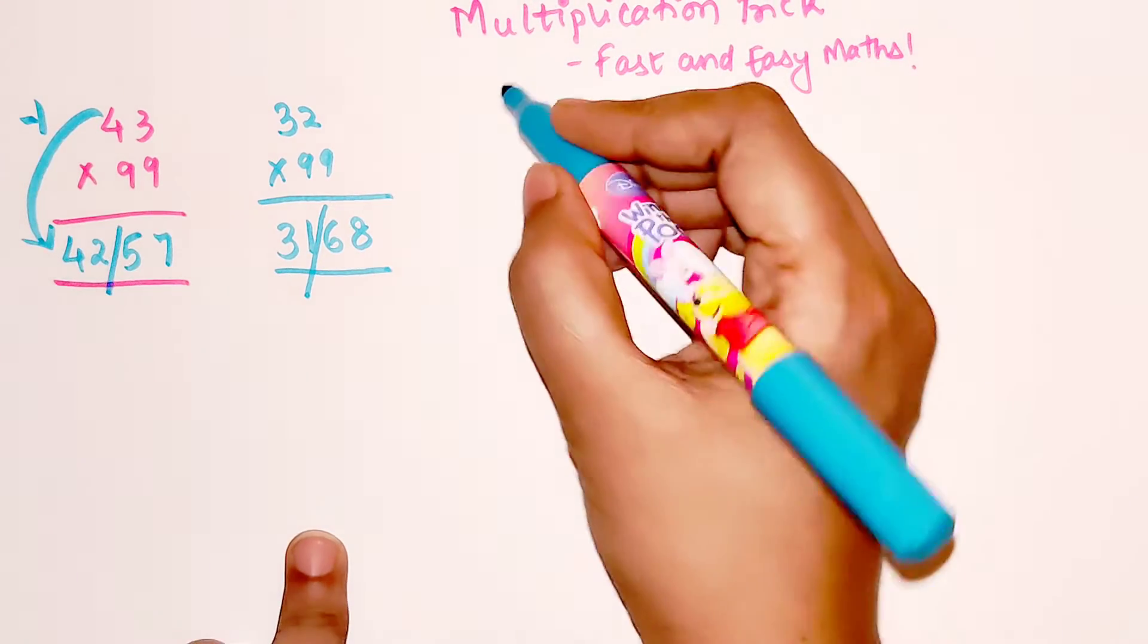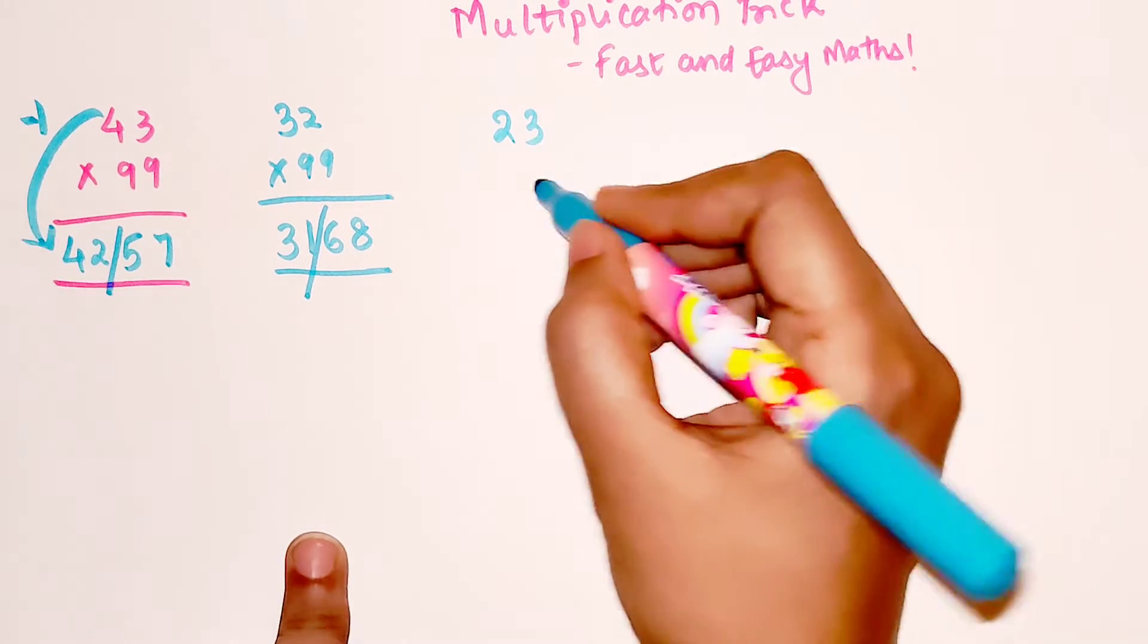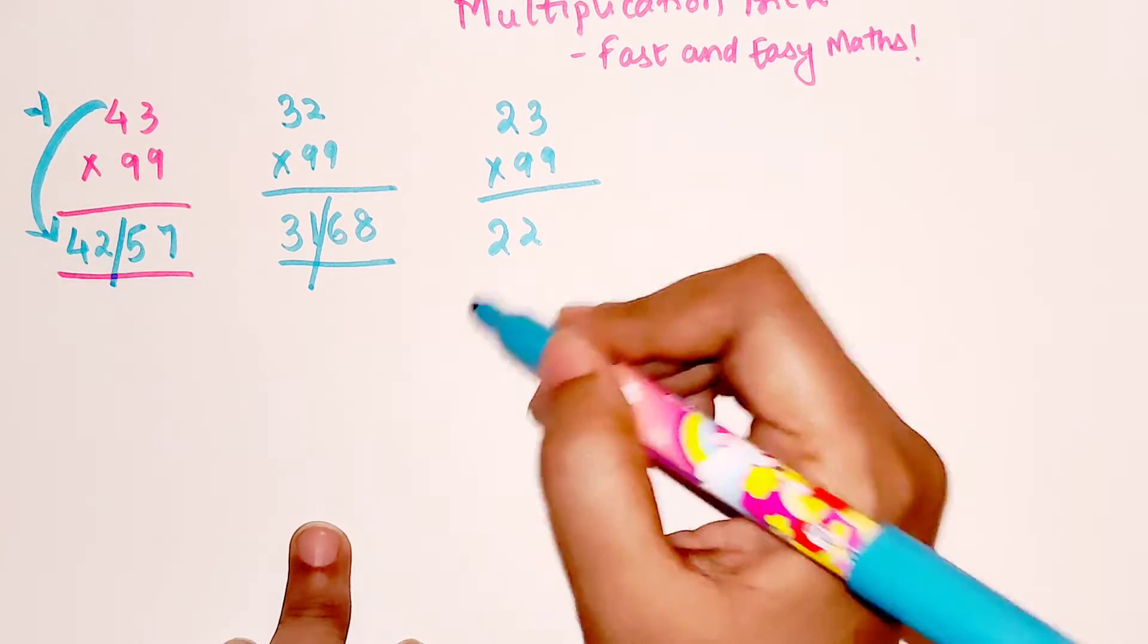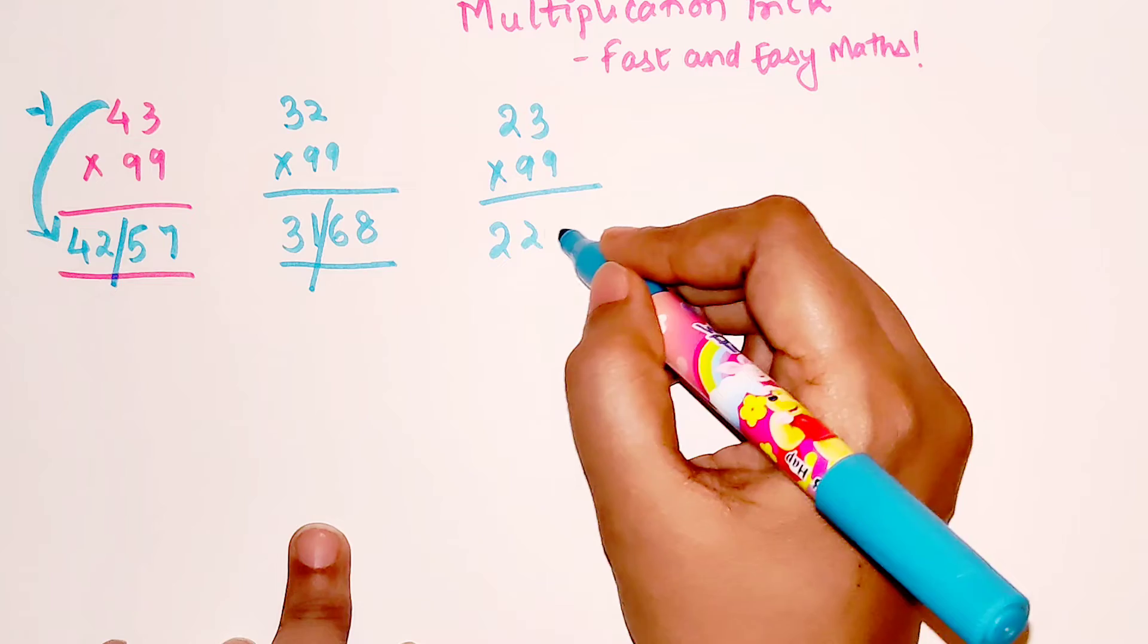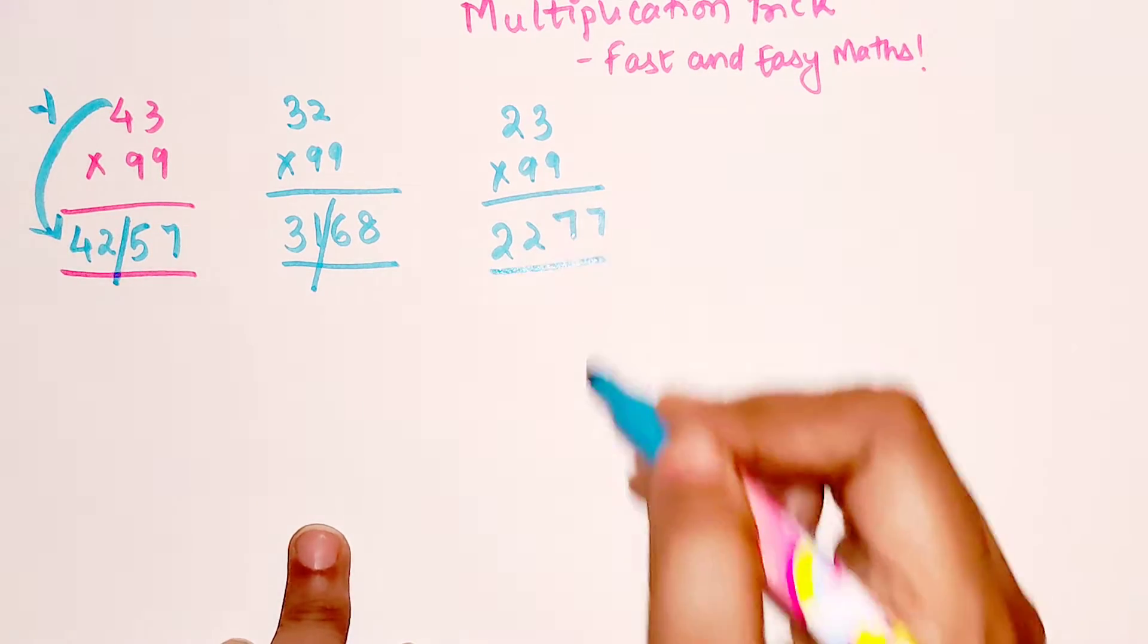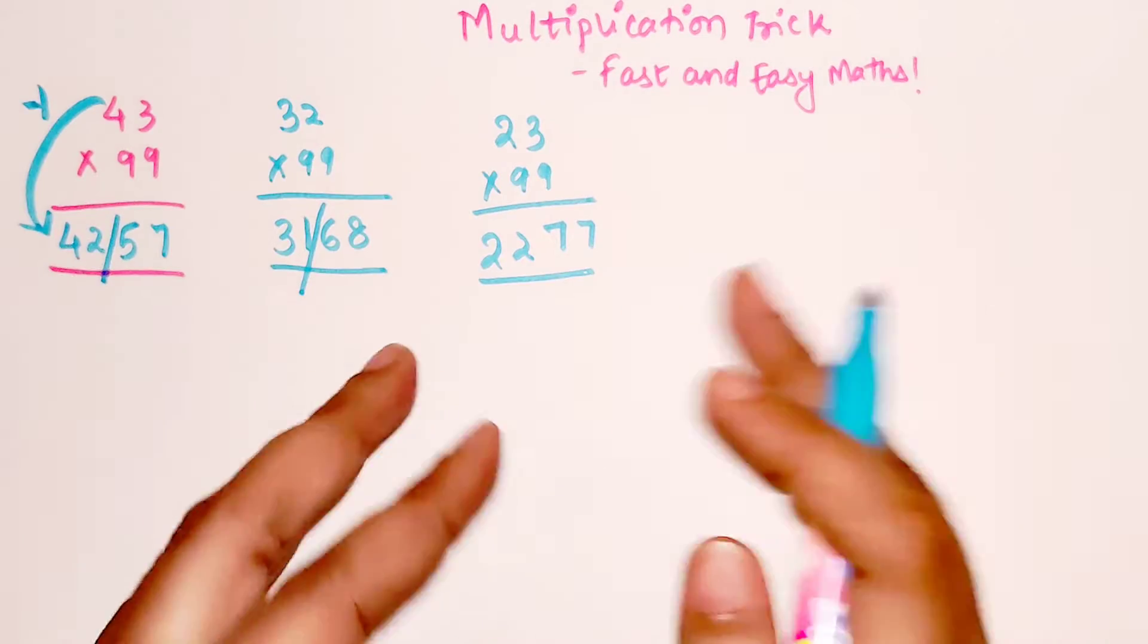So now let's very quickly do 23 into 99. You get 22. 23 minus 1 is 22. And then what you should add to 2 to get 9, that is 7 and 7. So you saw, I can literally do this instantly.